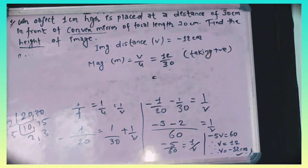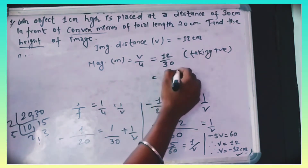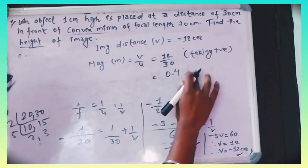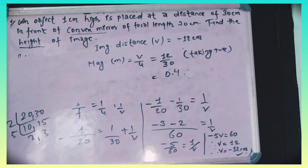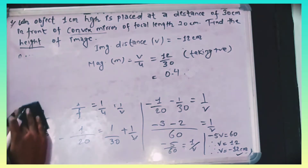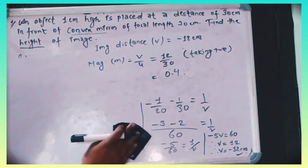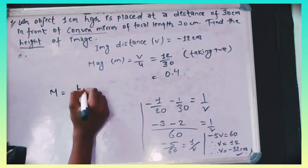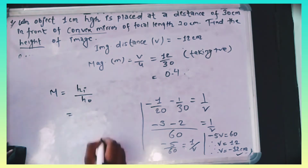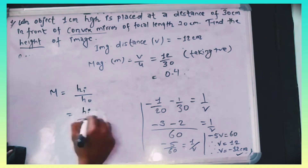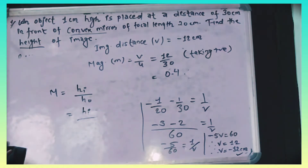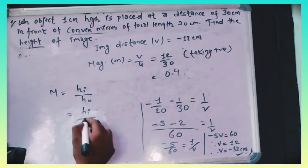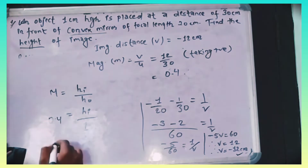The magnification value is 0.4. Height of image equals magnification multiplied by height of object. So height of image is 0.4 times 1 cm, which gives the height of image.